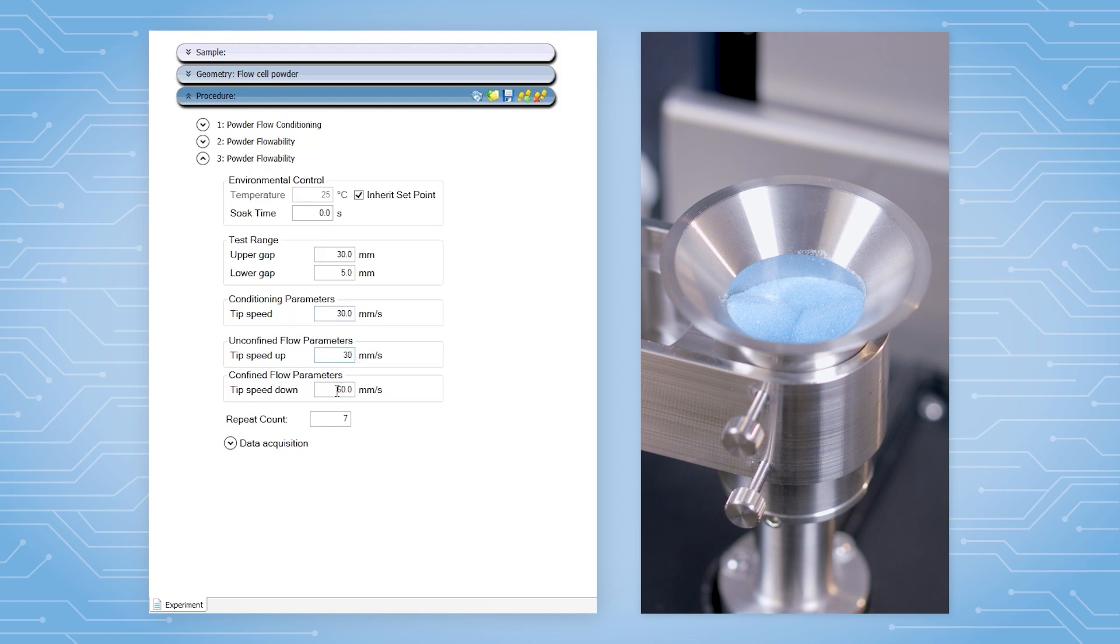To measure flow ability at different rates, add a duplicate powder flow ability step and enter the desired tip speed.